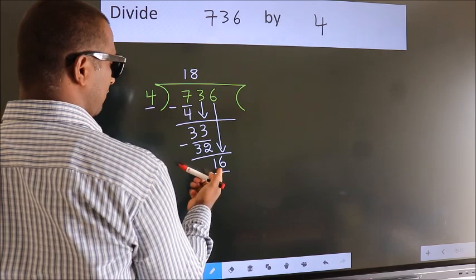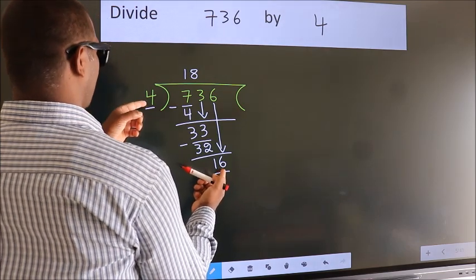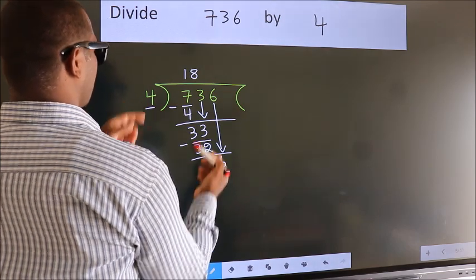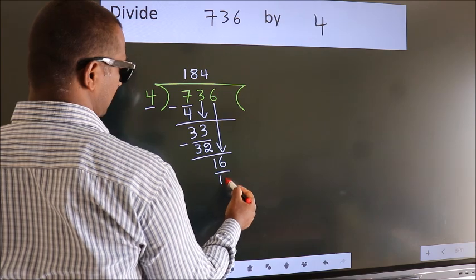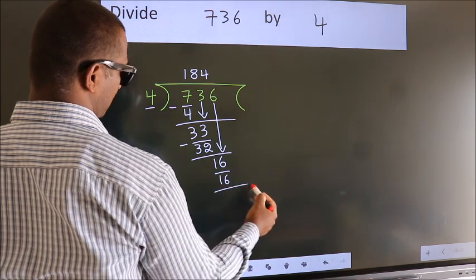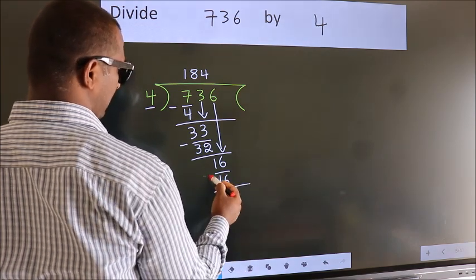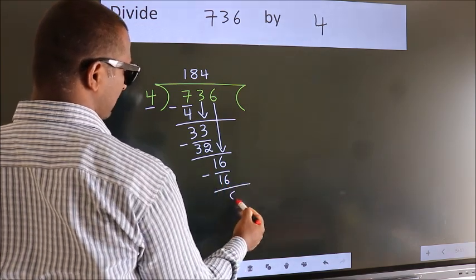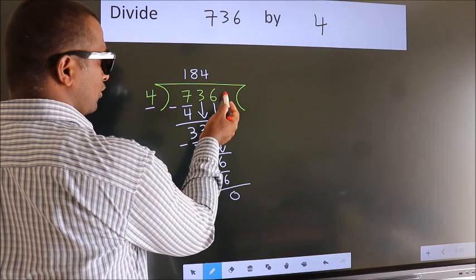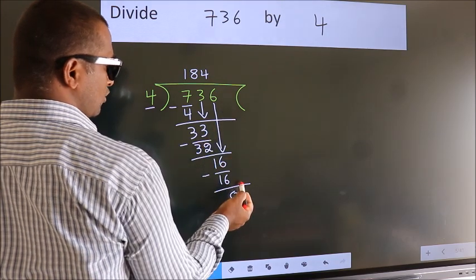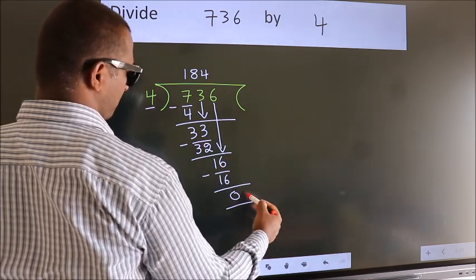When do we get 16 in the 4 times table? 4 fours are 16. Now we subtract — we get 0. No more numbers to bring down, so we stop here.